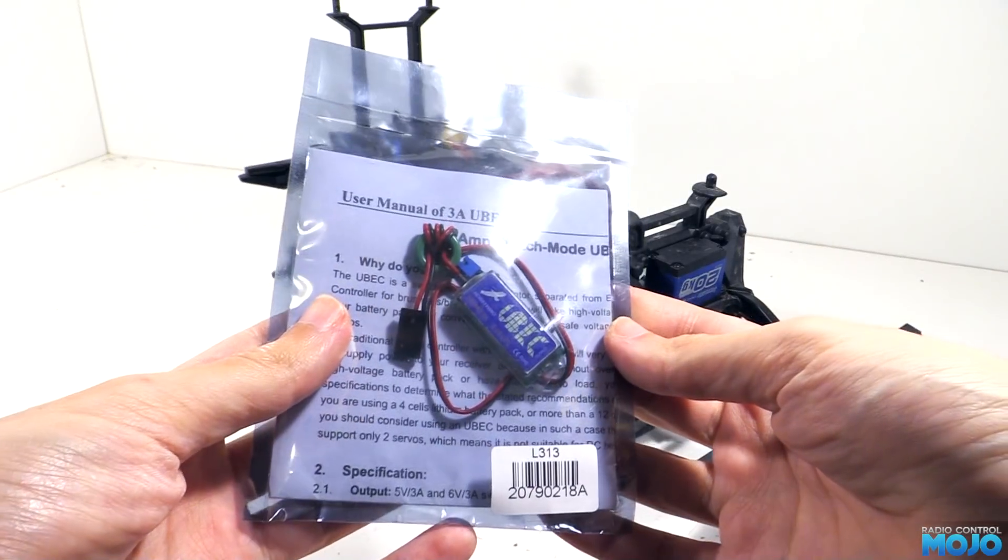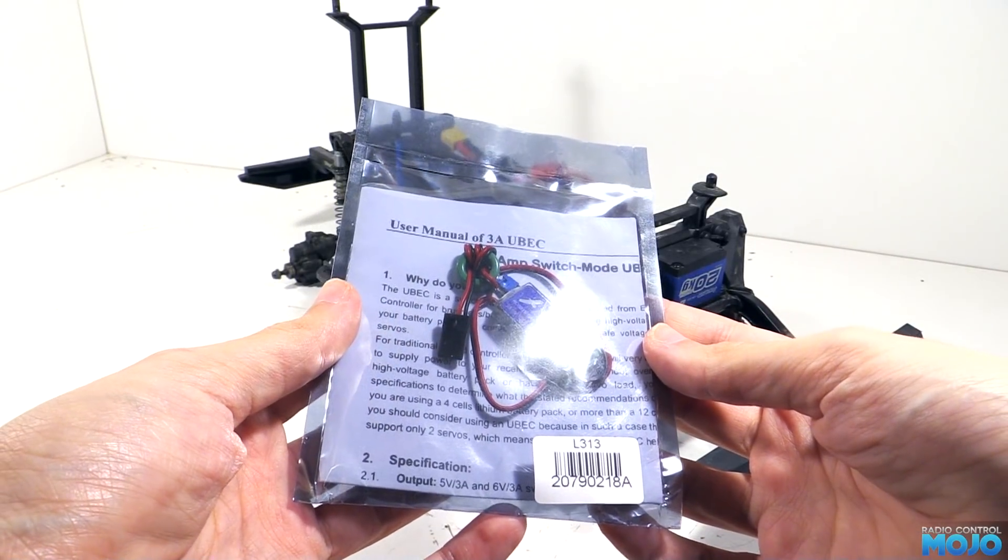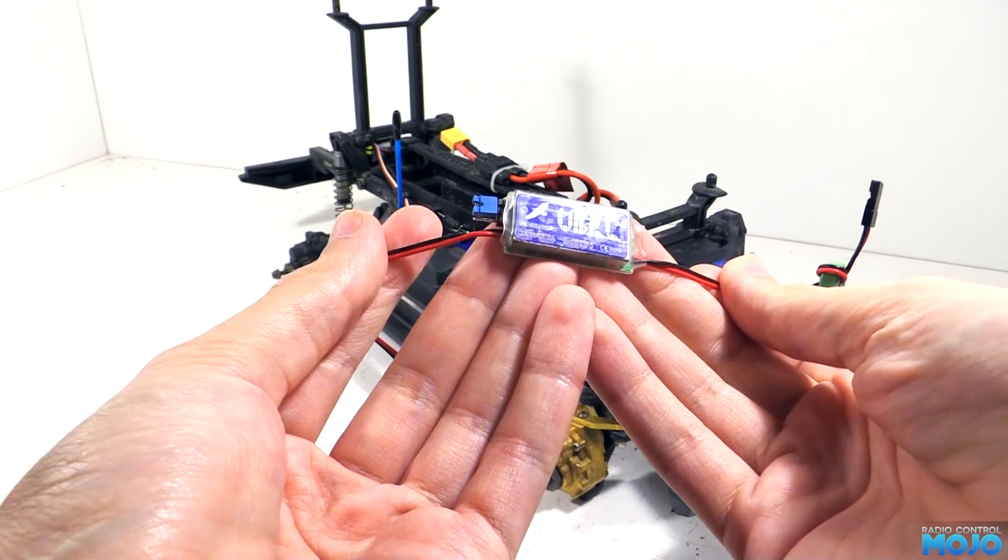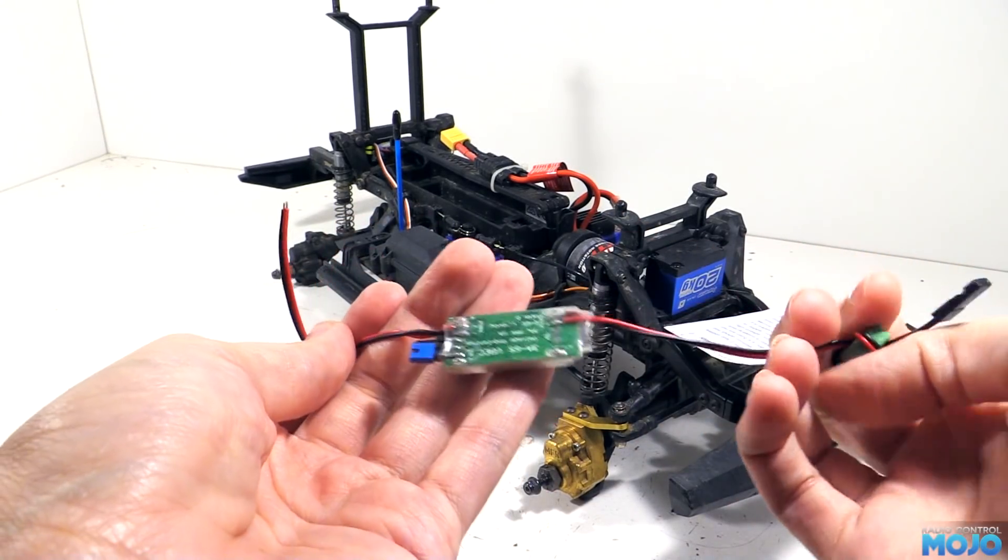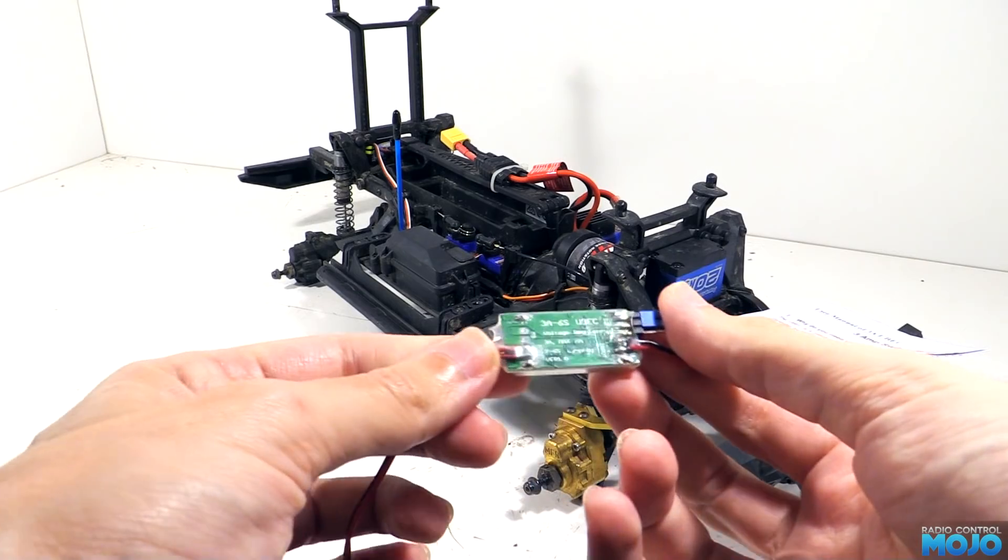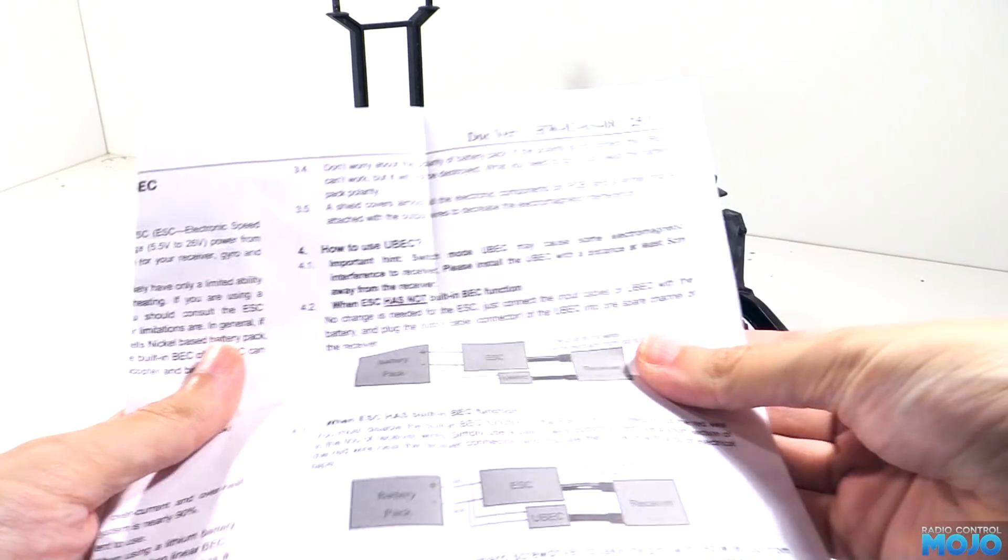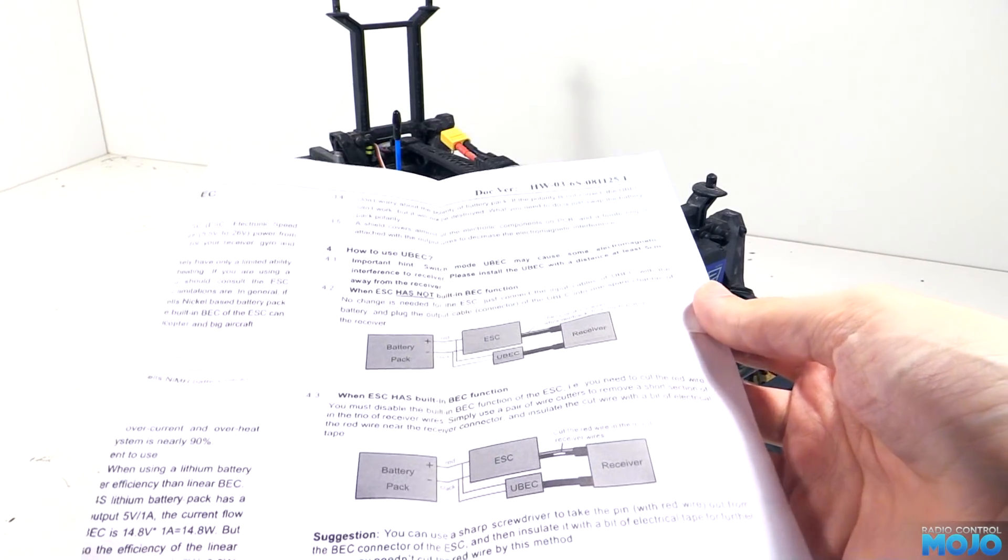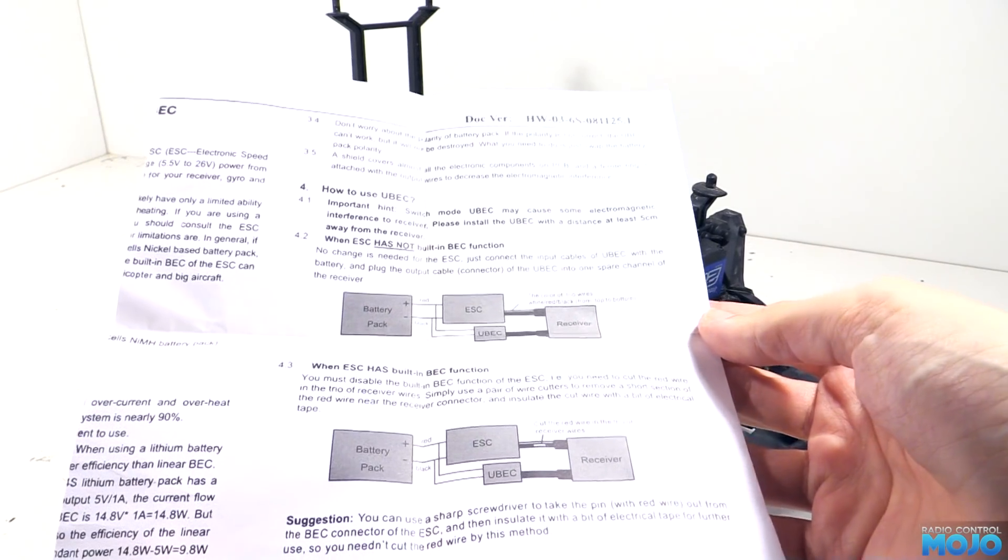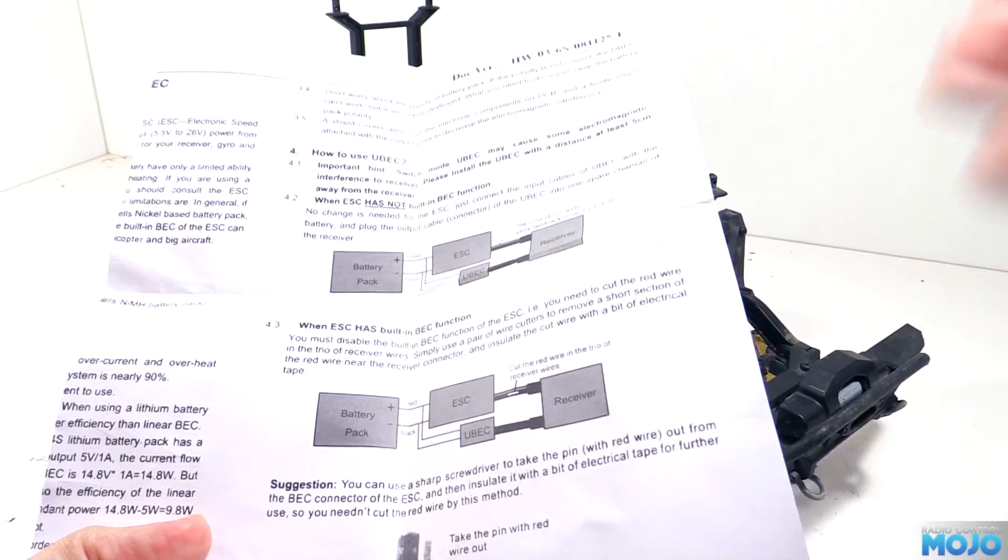We'll start with your bog-standard BEC. It's got an input on one side that connects to your main battery, and it's got an output that supplies the 5 or 6 volts to power the radio gear. This Hobbywing BEC has a nice manual with some good clear diagrams. Most BECs are fairly simple devices like this one, with just an input and an output.